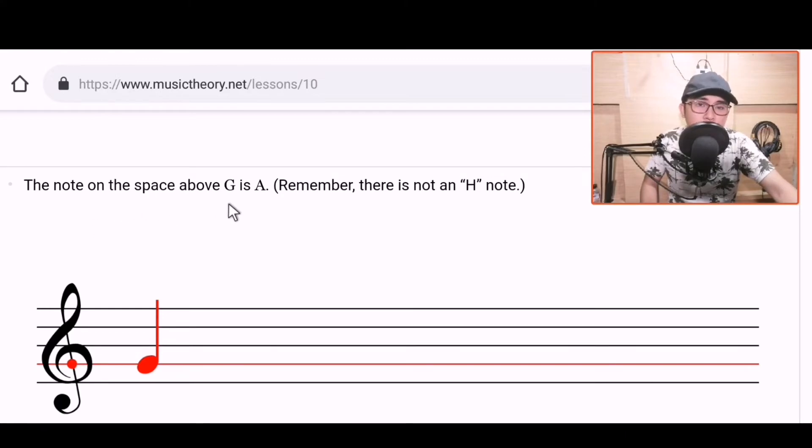The note on the space above G is A. Remember, there is not an H note. Okay? So in music guys, we don't have the letter H. Except in old versions where they use H, meaning I think it's a B, the German term for B. But in modern terms, we don't have H in music. Okay? So again, the note on the space above G is A. So this is G. And then the next note is in the space, not on the line. Always remember, our system for reading notes is line to space.